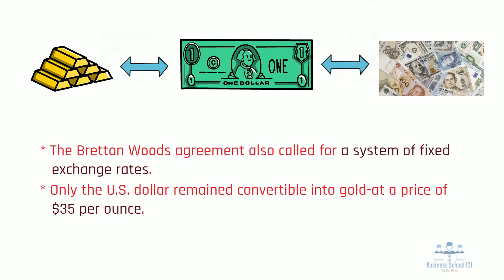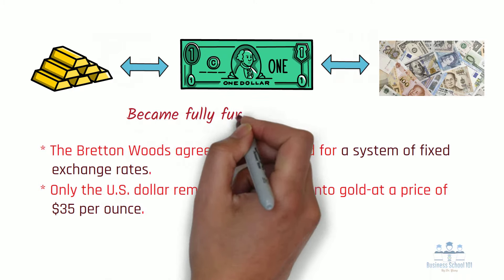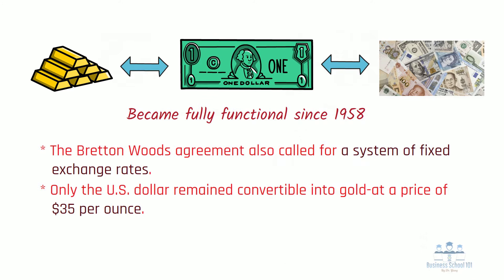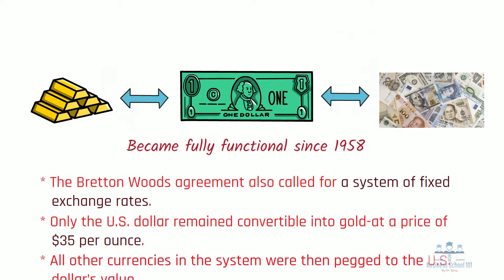It wasn't until 1958 that the Bretton Woods system became fully functional. Once implemented, its provisions called for the U.S. dollar to be pegged to the value of gold. Moreover, all other currencies in the system were then pegged to the U.S. dollar's value.